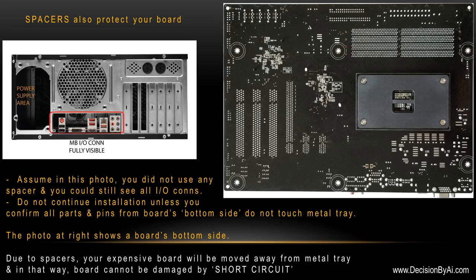Spacers also protect your board. Assume in this photo you did not use any spacers but could still see all IO connectors. Do not continue installation unless you confirm all parts and pins from the board's bottom side — remember, bottom side — do not touch the metal tray below. The photo on the right shows a board's bottom side: this area is for memory modules, here is the PCI area, and you can see many parts mounted here, including what appear to be power supply cables. Due to spacers, your expensive board is moved away from the metal tray, and in that way the board cannot be damaged by a short circuit.